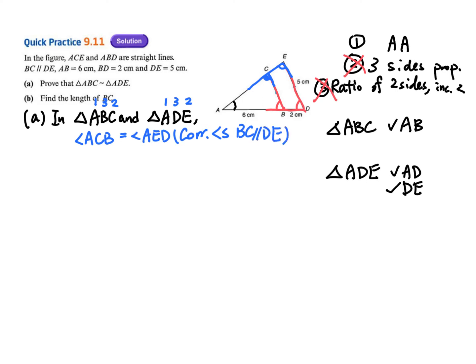Angle ABC equals angle ADE — same reason: corresponding angles, BC parallel to DE.